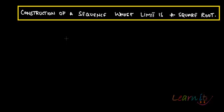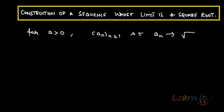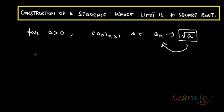Let's construct a sequence whose limit is actually a square root. So what I'm trying to construct here is for some real number a greater than 0, let's construct a sequence aₙ, n greater than or equal to 1, such that aₙ tends to √a. Why are we trying to do that? Because that would actually imply that I can find out the square root of a number by looking at some sequence. So √a can actually be approximated via some sort of a sequence.